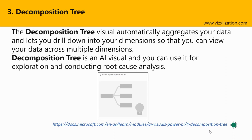Now let's talk about the decomposition tree. The decomposition tree visual automatically aggregates your data and lets you drill down into your dimensions so that you can view your data across multiple dimensions. It is an AI visual and you can use it for exploration and conducting root cause analysis. This is also another great AI visual and we also have an example.